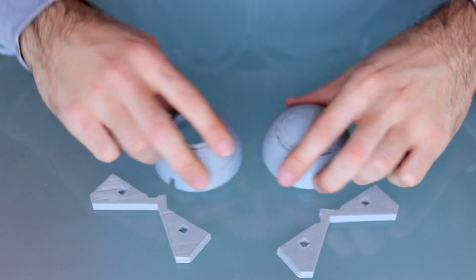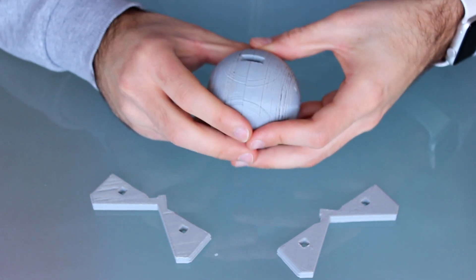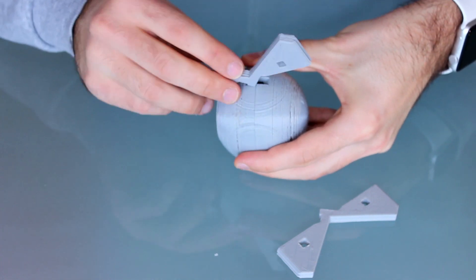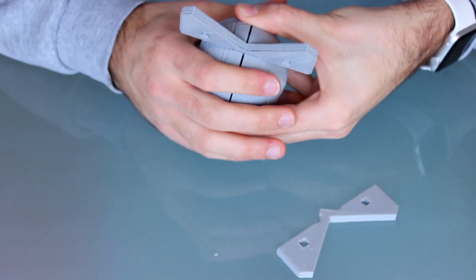To start we're gonna assemble everything together without using super glue to check if all the pieces are fitting in place. So we will take both halves of the sphere and we will hold them together while we insert the separators from both sides as you can see here.